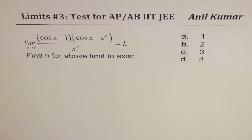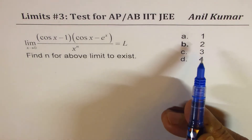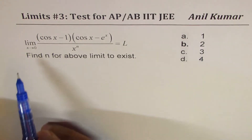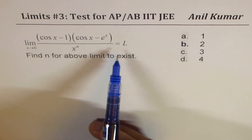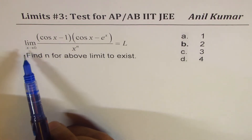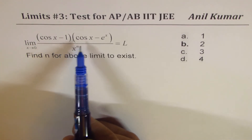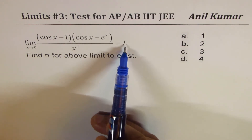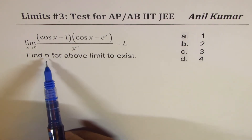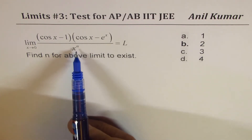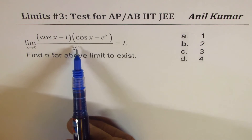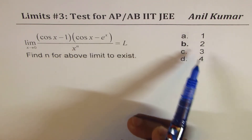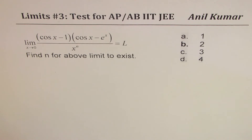This is an excellent question from a previous IIT JEE test paper. It is a multiple choice question with four choices. We are given that the limit as x approaches 0 of cos x minus 1 times cos x minus e to the power of x, divided by x to the power of n, exists and equals L. We have to find the value of n in the denominator.